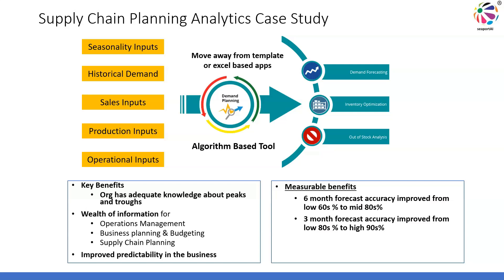The car manufacturing company could have so many types of models, so many different variants, and so many different colors. All these factors need to be considered across the 5 inputs. This cannot be handled in an Excel-based tool, which is what the organization we worked with was doing earlier. We brought in an algorithm-based tool where these inputs at a granular level were analyzed, and the forecast was provided to the respective organizations, again at a granular level.